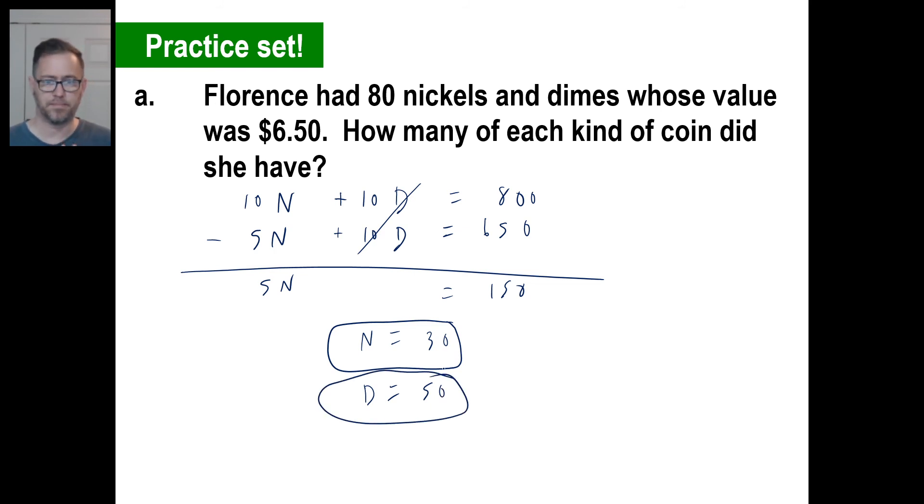And there you go. Let's prove it. 50 dimes is how much money? $5. So 30 nickels. What's 30 times five? Well, that's 150. 150 cents. What's that add up to? There you go. You proved it's right.